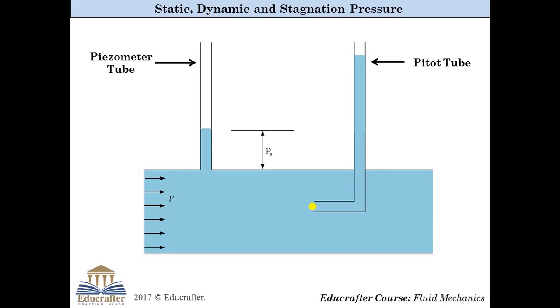And the pressure experienced at that point is called stagnation pressure. The pressure difference between stagnation pressure and static pressure is called dynamic pressure. And dynamic pressure is because of the kinetic energy of fluid.